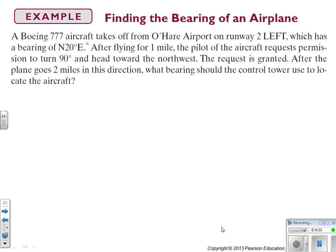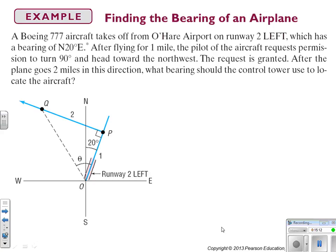A Boeing 777 aircraft takes off from O'Hare Airport on runway 2 left, which has a bearing of north 20 degrees east. After flying for one mile, the pilot of the aircraft requests permission to turn 90 degrees and head toward the northwest. The request is granted. After the plane goes two miles in this direction, what bearing should the control tower use to locate the aircraft?